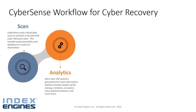We define an entropy score anywhere from zero to 100. For example, a Word document yesterday had an entropy score of 47, then 47, then 48 — and the next day it turns to 99. A score of 99 signifies encryption.